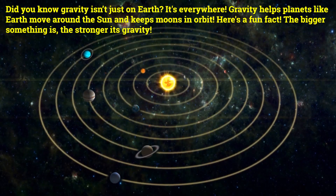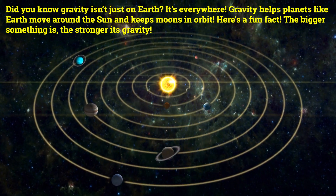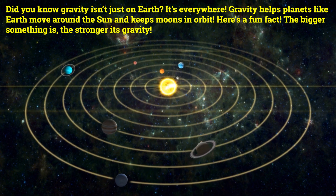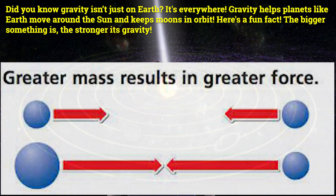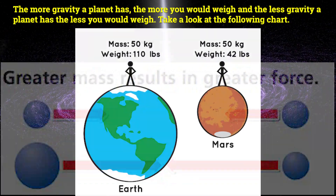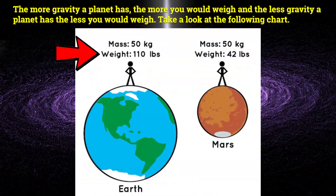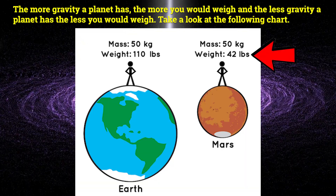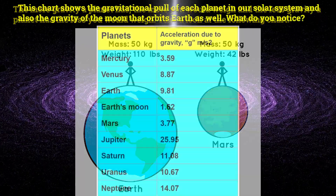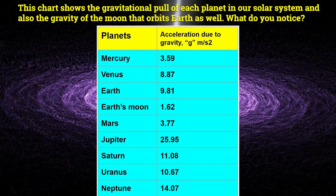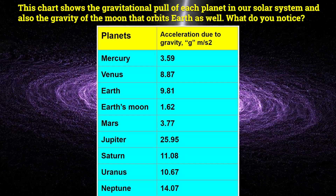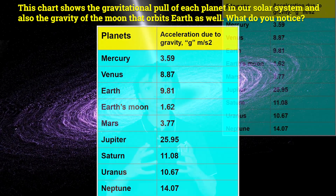Did you know gravity isn't just on Earth? It's everywhere. Gravity helps planets like Earth move around the sun and keeps moons in orbit. Here's a fun fact: the bigger something is, the stronger its gravity. The more gravity a planet has, the more you will weigh, and the less gravity a planet has, the less you will weigh. Take a look at the following chart — it shows the gravitational pull of each planet in our solar system and also the gravity of the moon that orbits the Earth. What do you notice?